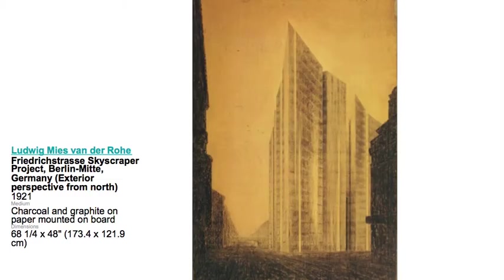Moving forward, Mies is somebody who is not a theorist. He doesn't write a lot — we don't have a lot of written work from him. But one of the earliest theoretical projects we do have from him, before he has built work, is this particular skyscraper drawing. Notice the scale of this drawing: it's 68 inches by 48 inches. So this is comparable to one of your midterm boards or final boards that you print out, but it's just one large pencil drawing.